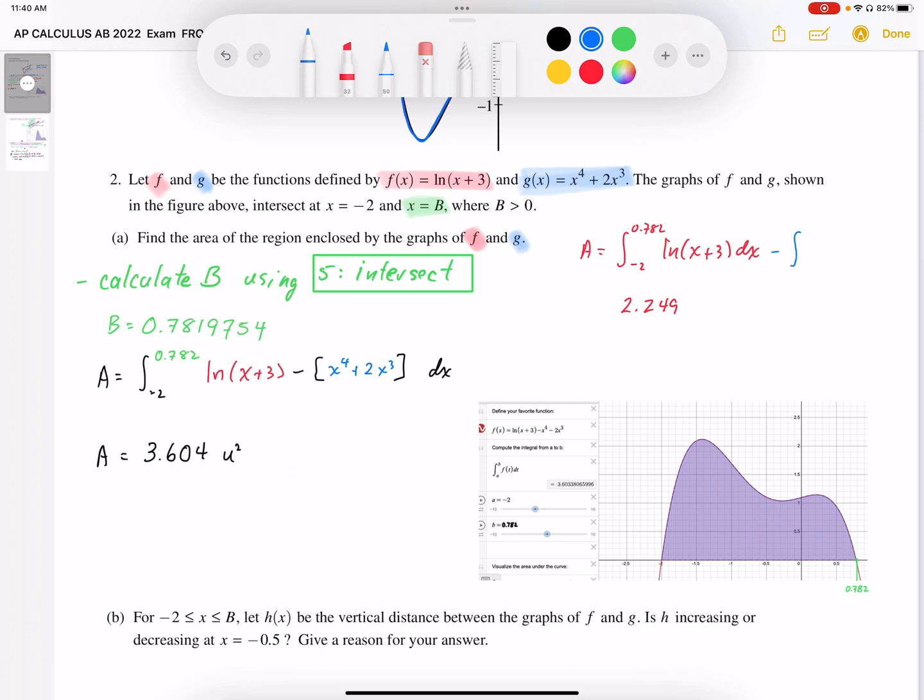which would be the area underneath the polynomial function, from the same two bounds, of x^4 + 2x^3.